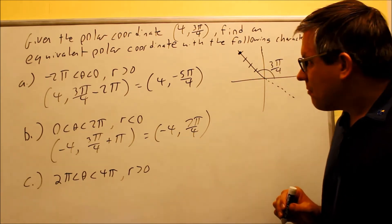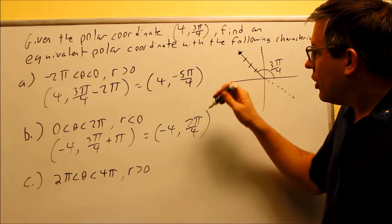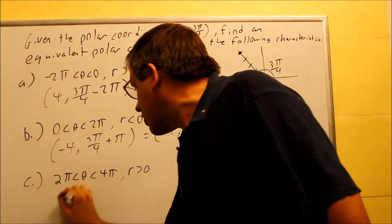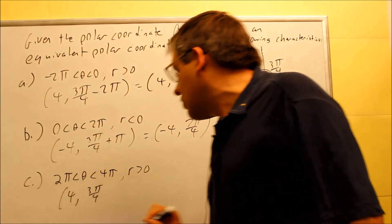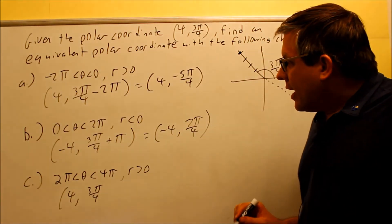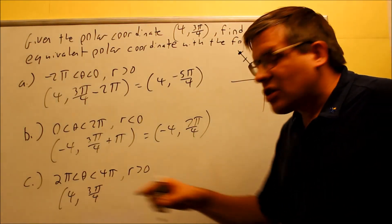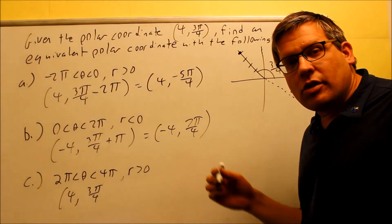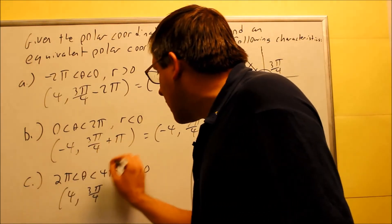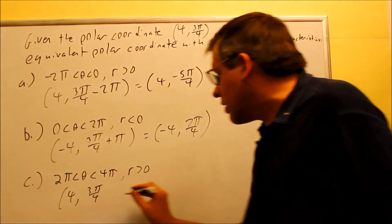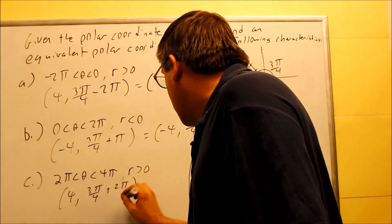For part C, the same point here, we need to make the r positive, so it already is. 3π/4 is my initial starting angle. If we're not changing the sign of the r, which is the case here, you want to either add or subtract 2π. I definitely want to add 2π because my answer needs to be more than 2π there, so I'm going to add 2π to this.